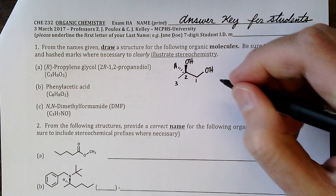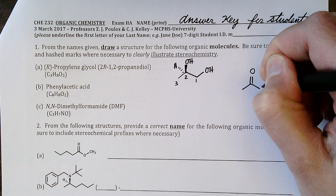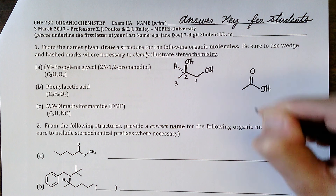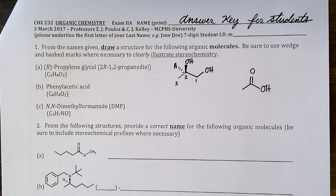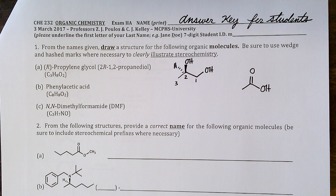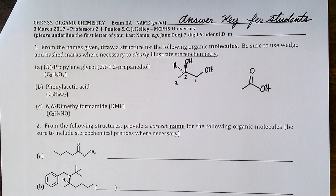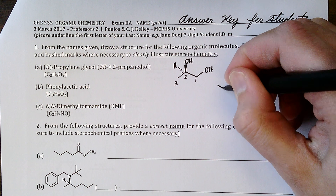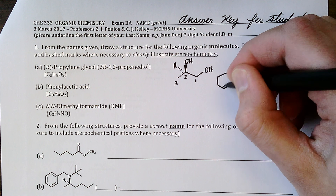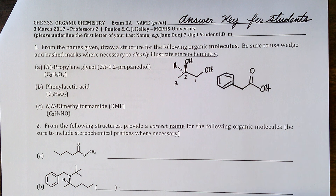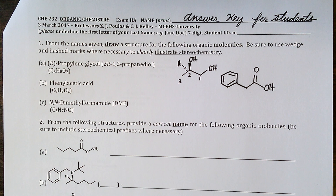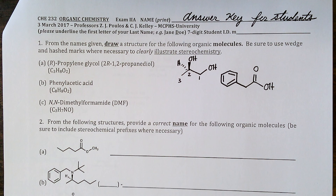Phenyl acetic acid: remember acetic acid is the two-carbon carboxylic acid, also known as ethanoic acid. If you add a phenyl substituent on the alpha carbon it becomes phenyl acetic acid — this is the smell of farm animals, specifically elephants. 1c is the polar aprotic solvent dimethylformamide, also known as DMF.